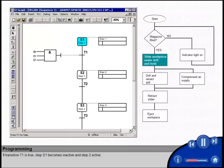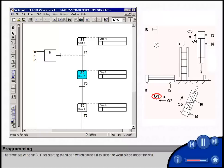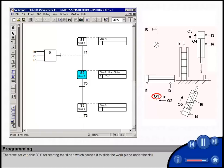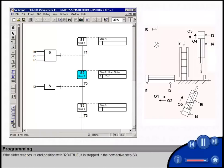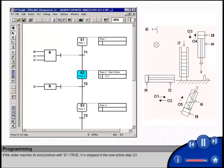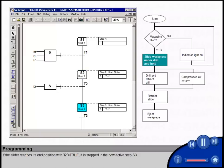If transition T1 is true, step S1 becomes inactive, and step 2 active. There we set variable O1 for starting the slider, which causes it to slide the workpiece under the drill. If the slider reaches its end position with I2 equals true, it is stopped in the now active step S3.